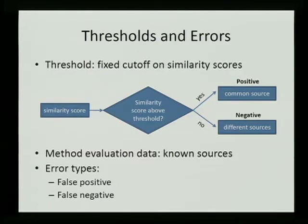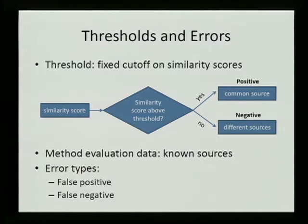Some methods of evaluating evidence may have nominal thresholds. For example, if you're using a statistical test of significance, you could consider the critical value for a type 1 error of 5%, or if you're working with a likelihood ratio, you could consider the number 1 as a cutoff. In general, a threshold is a fixed cutoff on the similarity scores. If the similarity score is above the threshold, the method indicates a common source; if below, it suggests different sources.